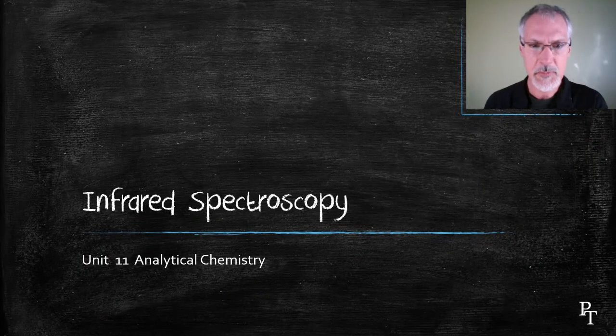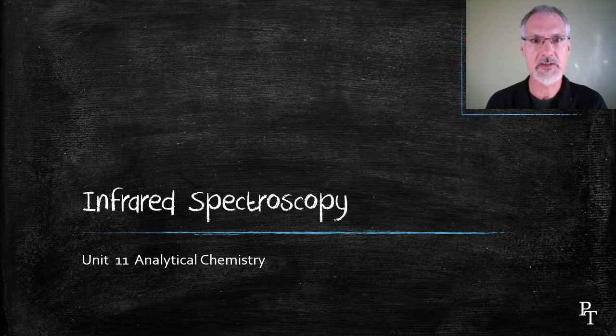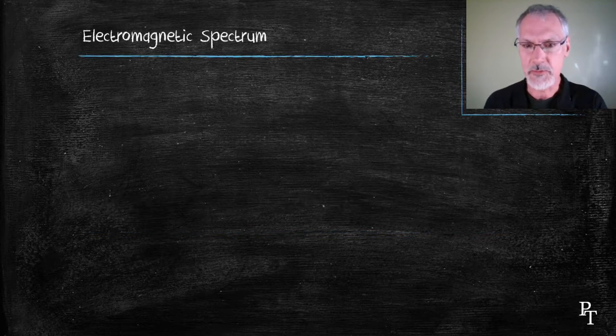Infrared spectroscopy, along with mass spectroscopy and NMR, forms three methods of analyzing and determining the structure of organic molecules. To understand how they work, let's begin by looking at the electromagnetic spectrum.